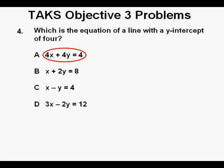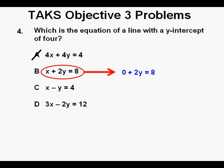We'll start with answer choice A. That becomes 4 × 0 + 4y = 4, and that simplifies to 4y = 4. And dividing by 4 to solve for y, we see that y = 1. And since that's not y = 4, we cross off A because it's not the right answer. Now we go down to answer B. Substituting 0 for x, we have 0 + 2y = 8, and that simplifies to 2y = 8. And dividing both sides of the equation by 2, we have y = 4. And since that's what we need, we choose B as our right answer.